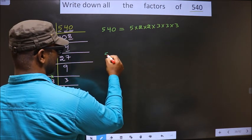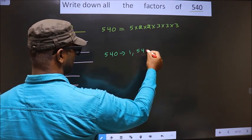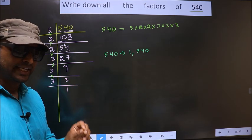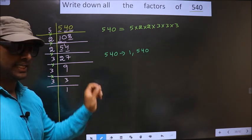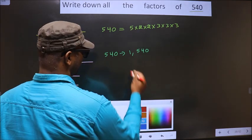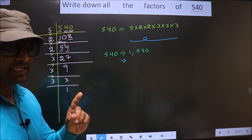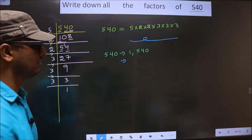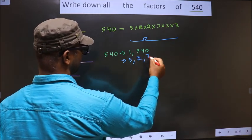Any number you take will definitely include 1 and the number itself in its factors. Now, from these prime factors, if you select 1 different number at a time, we get 5, 2, and 3.